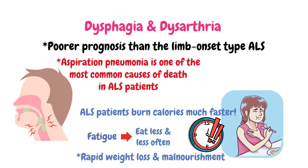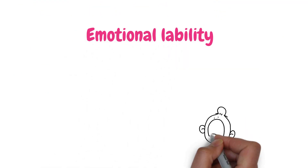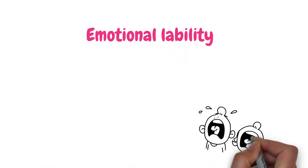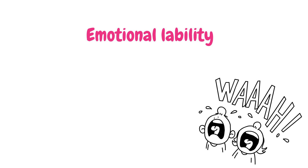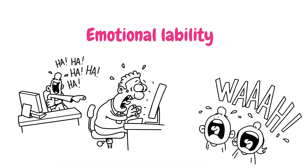Around 15–45% of people with ALS experience emotional lability, which refers to uncontrolled and inappropriate crying or laughing, although it is often not recognized as part of ALS.